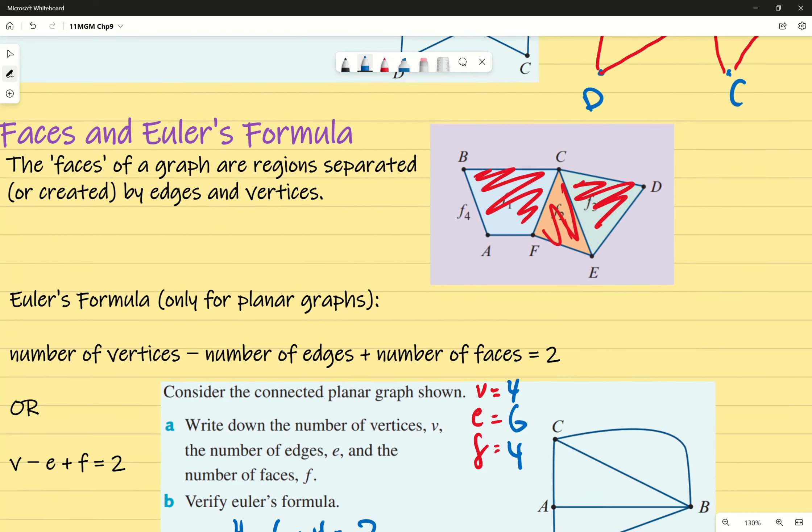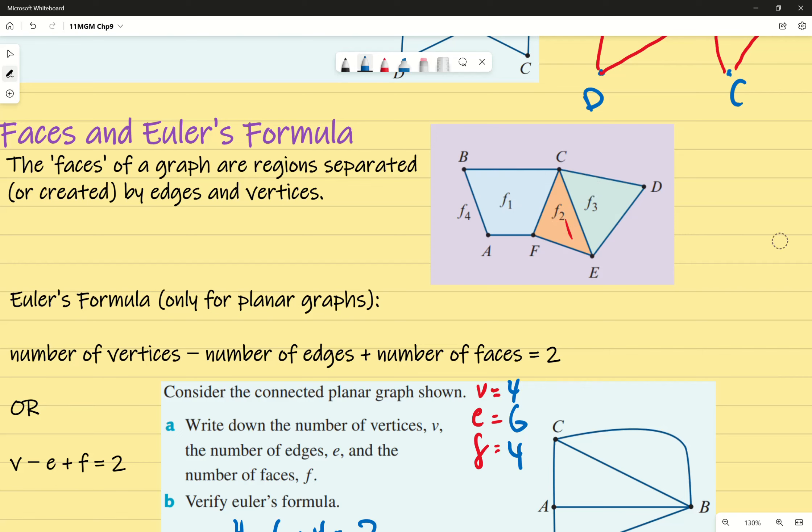Faces are just regions separated by the lines. If I have anything that's enclosed, that's a face. Face number two is enclosed by these three edges. Anything fully enclosed is a face. The other idea is that if it's on the outside, because the graph itself is enclosed by this set of edges, there's another face on the outside as well.